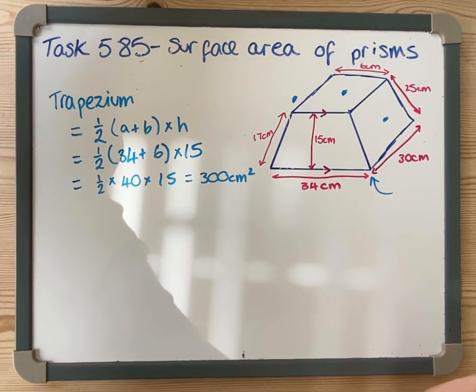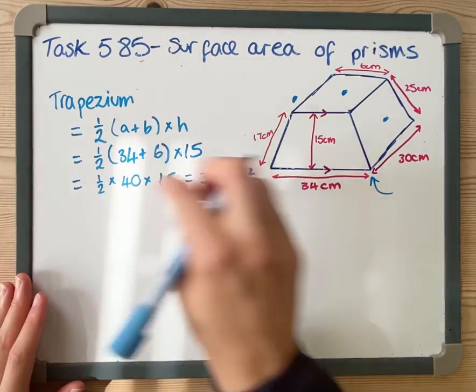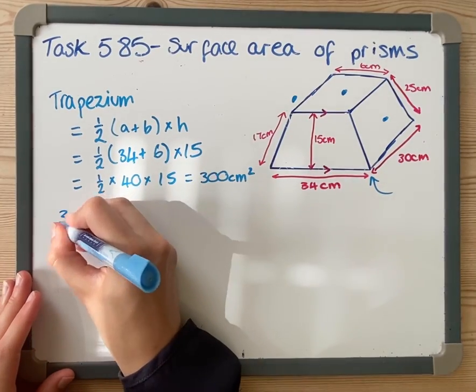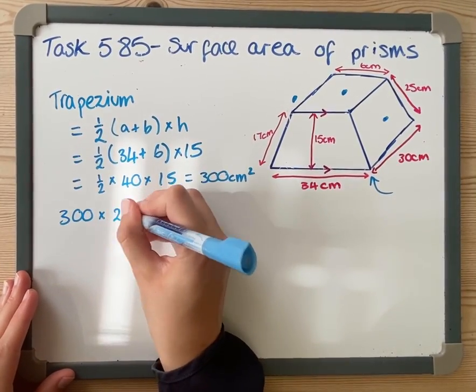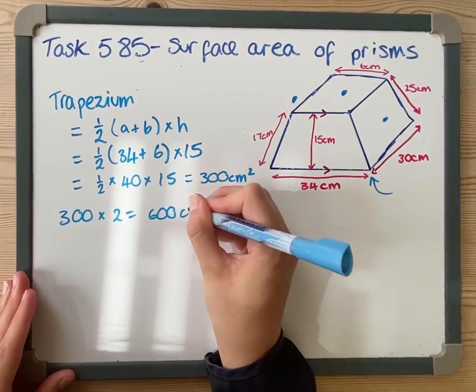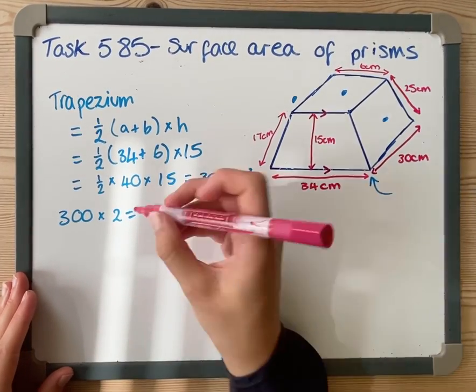I have now got what one trapezium is. Obviously I have two because I've got that one and that one, so I'm just going to do 300 times 2, which we all know is 600 centimeters squared. So that's the trapezium done.